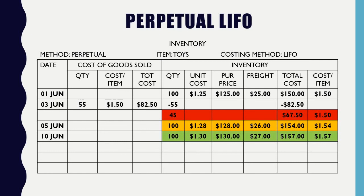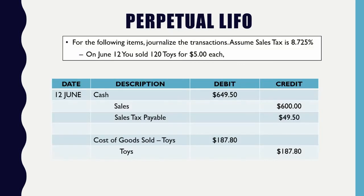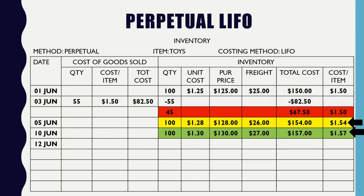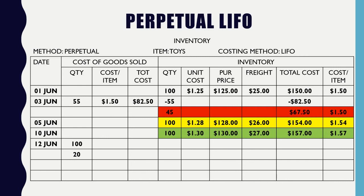The rules of LIFO — when we start to cost our goods sold, we're going to start from the bottom and work our way up to the top. On June 12th, you sold a total of 120 toys. Using LIFO, I sell my latest batch first. June 10th is my first 100 units. I take that first 100 units from my green batch and eliminate it — 100 units at $1.57 equals $157.